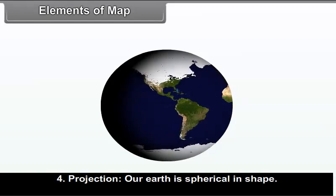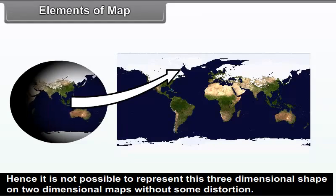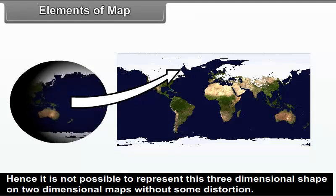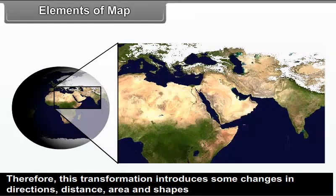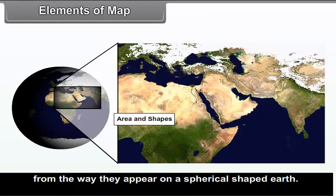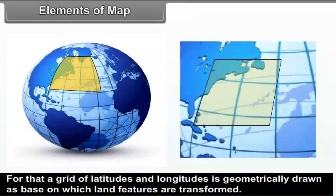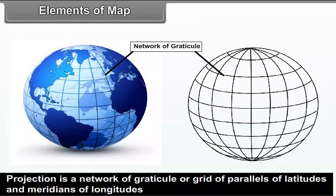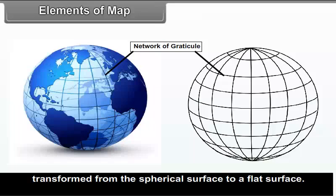Projection: Our earth is spherical in shape, so it is not possible to represent this three-dimensional shape on two-dimensional maps without some distortion. This transformation introduces some changes in directions, distance, area and shapes from the way they appear on a spherical earth. A grid of latitudes and longitudes is geometrically drawn as a base on which land features are transformed. Different types of projections can be constructed according to the requirements of a map and area. Projection is a network of graticule — a grid of parallels of latitude and meridians of longitude — transformed from the spherical surface to a flat surface.